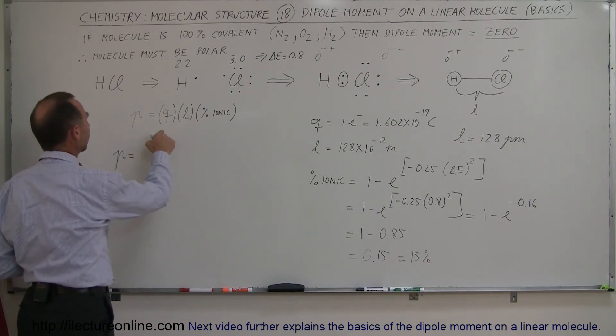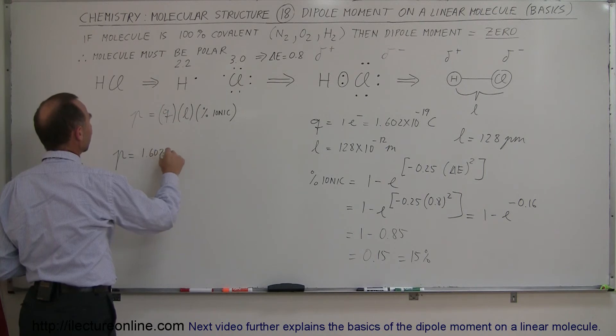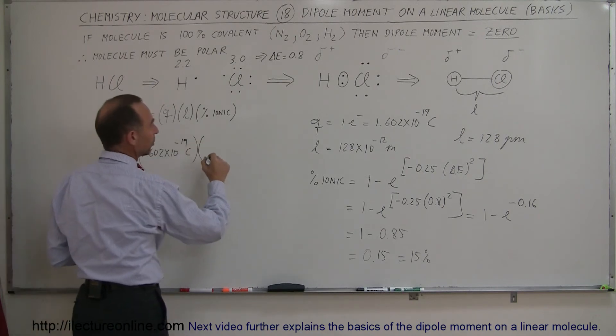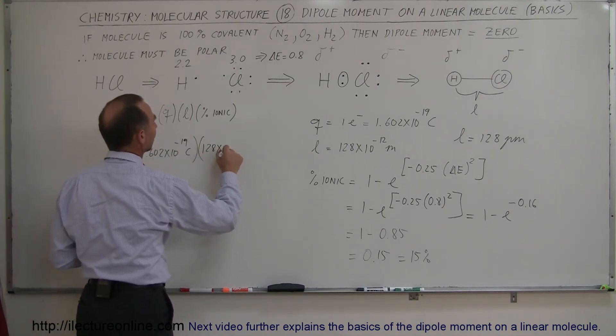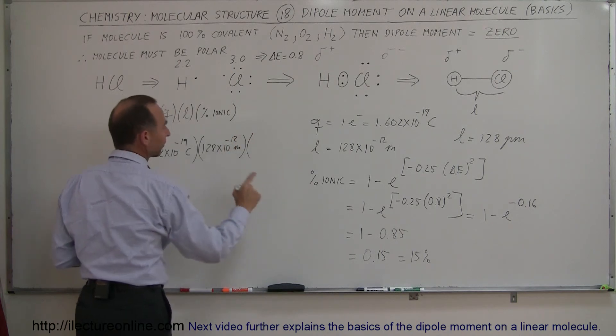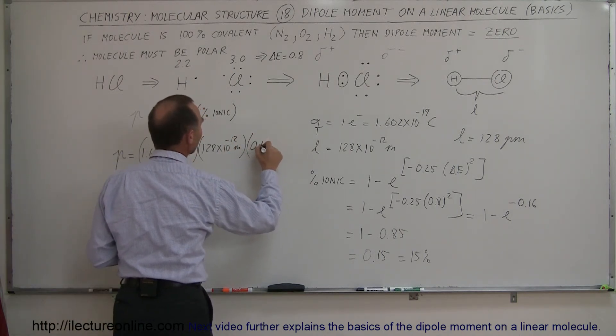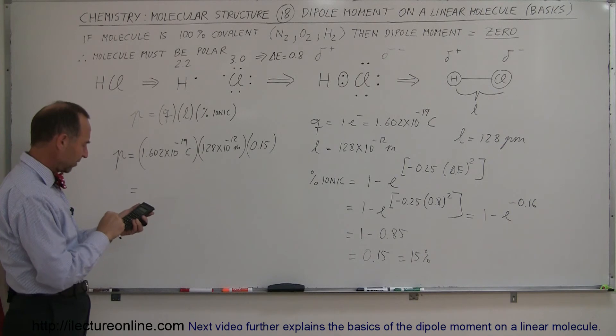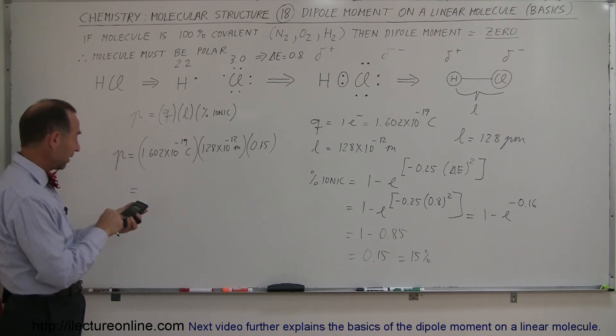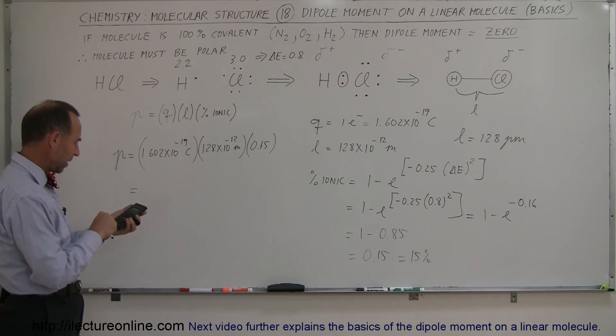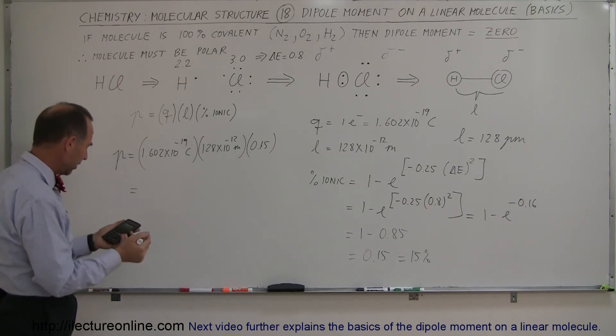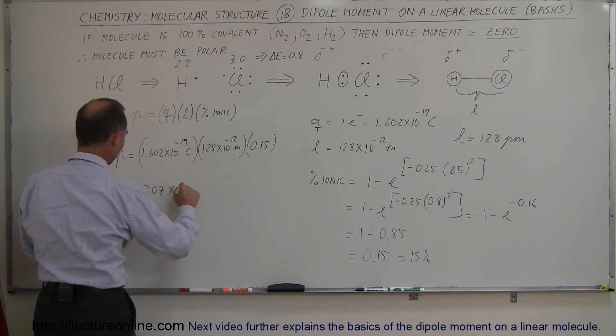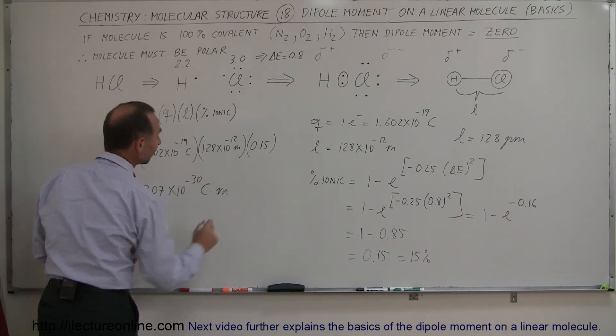So now we know that the dipole moment is equal to the charge, which is 1.602 times 10 to the minus 19 Coulombs. The distance in meters would be 128 times 10 to the minus 12 meters, and then we have to take into account that it's only about 15% ionic. And so when we multiply all that out, we get 1.6 E to the 19 minus times 128 E to the 12 minus times 0.15 equals, and so we get the dipole moment of 3.07 times 10 to the minus 30 Coulombs times meter.